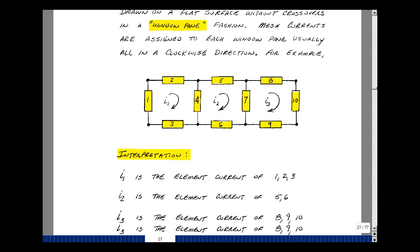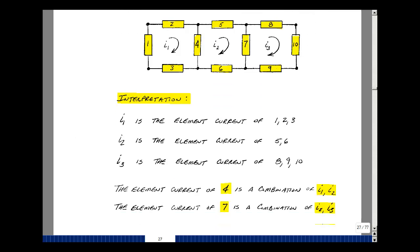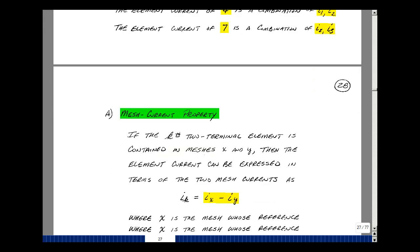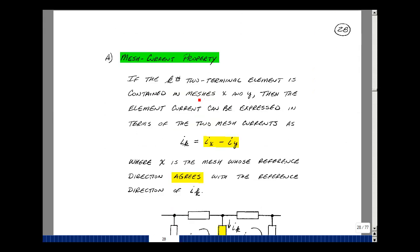This leads us to our first property of mesh currents. If the kth two-term element is contained in meshes x and y, then the element current can be expressed in terms of two mesh currents in the following way. The current I sub k is equal to I sub x minus I sub y, where x is the mesh whose reference direction agrees with the reference direction of I sub k.